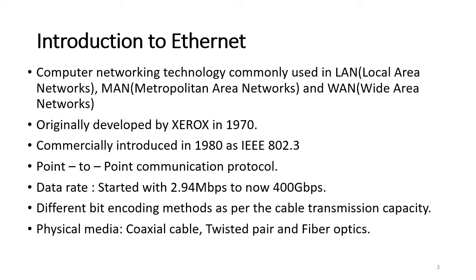Ethernet is basically computer networking technology — how two or many computers communicate with each other. There are different kinds of networks: LAN (Local Area Networks), MAN (Metropolitan Area Networks), and WAN. LAN is very small in size, mainly used in intranets or office areas with minimal nodes. MAN covers a big city where many LANs are connected together, and a connection of MANs makes a WAN — an intercontinental connection.